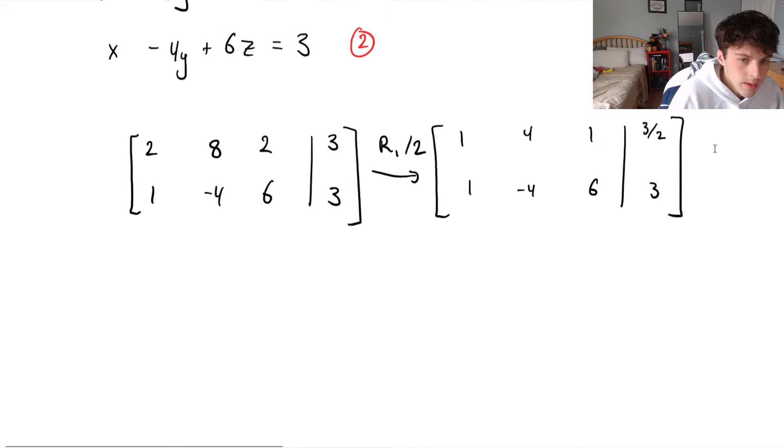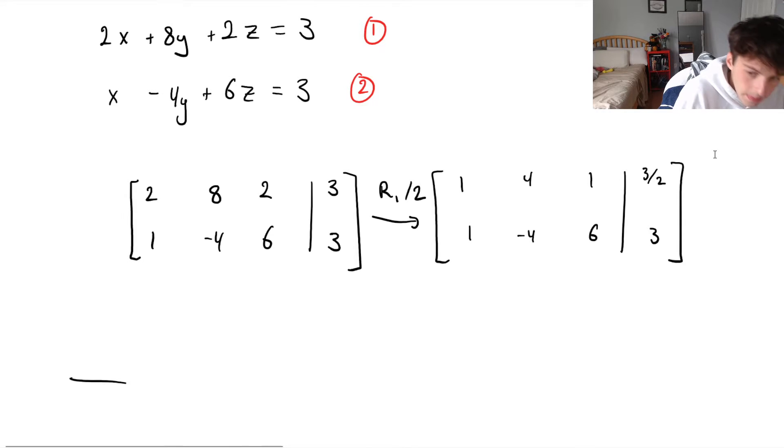Let's scroll down a bit. Okay. Next, we want a 0 to be in the bottom left entry underneath our leading entry. So we can do row 2 minus row 1. So 1 minus 1 would be 0. Negative 4 minus 4 would be minus 8. 6 minus 1 is 5. And 3 minus 1.5 is going to be 3 over 2, or 1.5. And our first row remains unchanged.